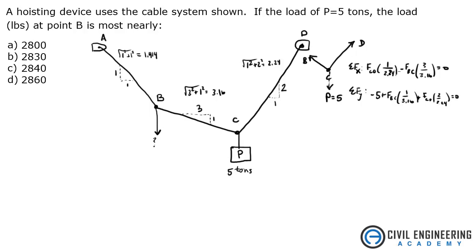So now you have two equations with two unknowns, force of CD and force of BC. I want to find out what force of BC is. So I'm going to solve for this first equation what force of CD is. So force of CD is going to equal force of BC times 3 over 3.16, and then you're going to be multiplying all that by the 2.24. So that gives you force of CD, and I get 2.127.